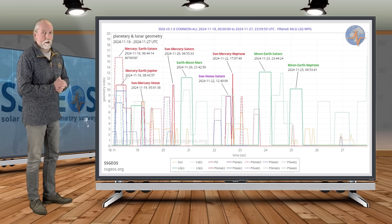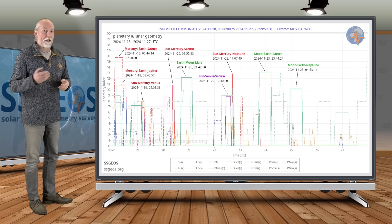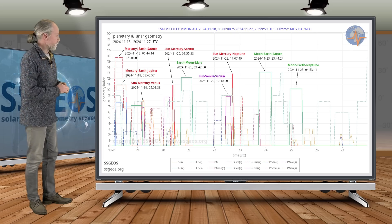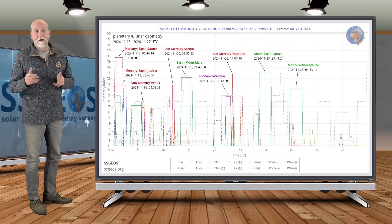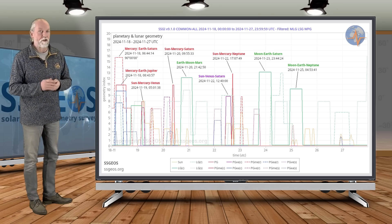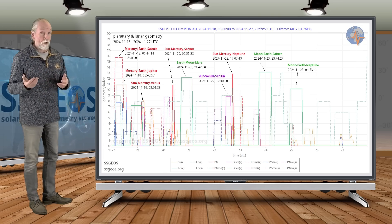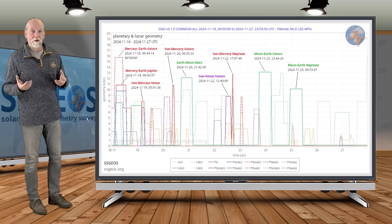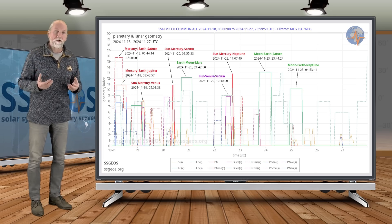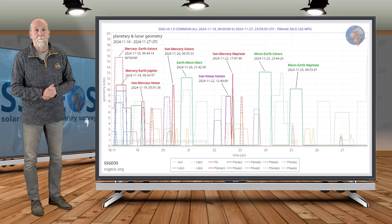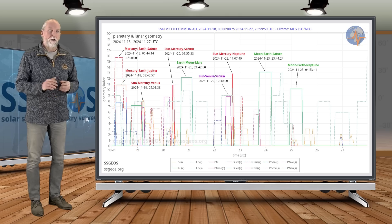That's the planetary and lunar geometry that we're going to have in the next time frame. Again, five planetary conjunctions from the 18th to the 22nd, that is one planetary conjunction on average every day. That is a lot, well above average.